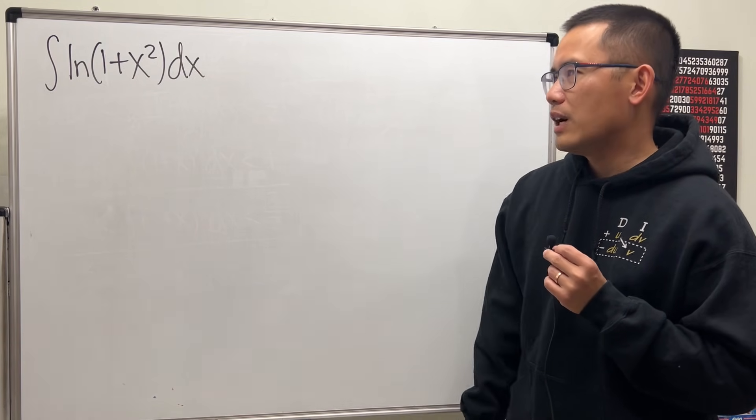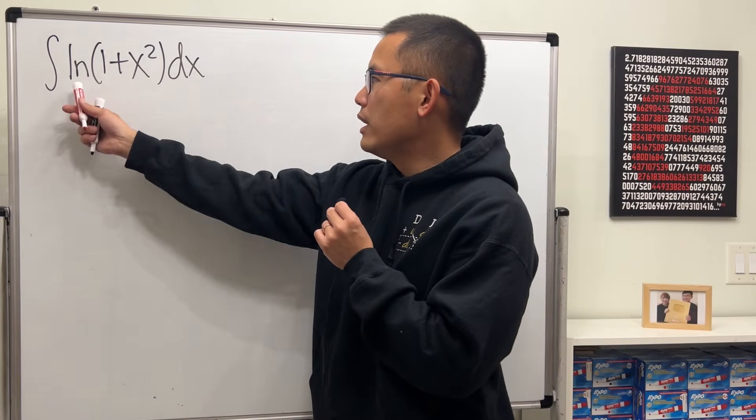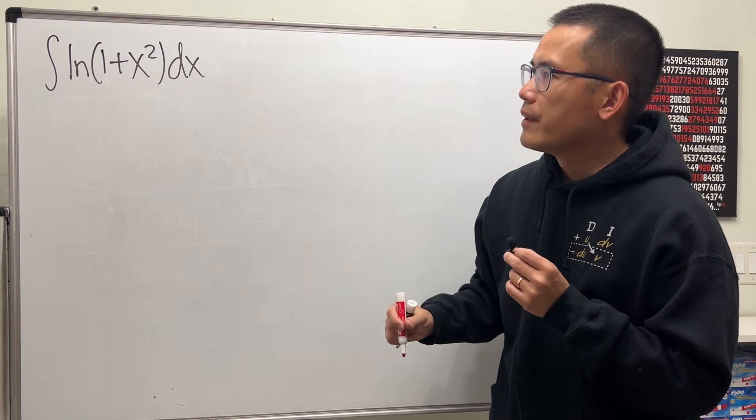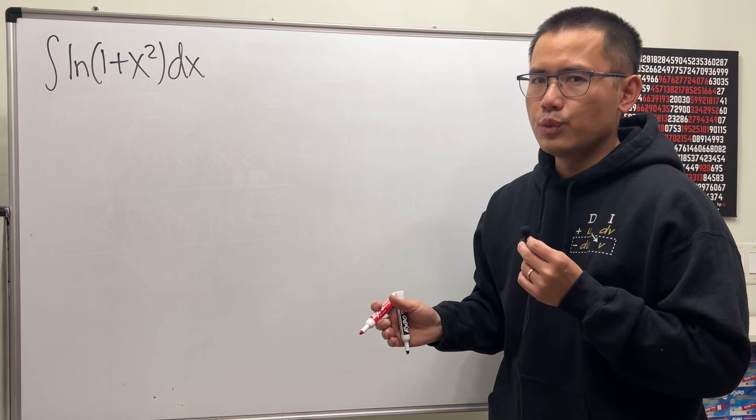Unfortunately, they didn't figure this out on stage. So here's the solution. We are going to integrate ln of 1 plus x squared. And if you first try u substitution, it's not going to work out too well.